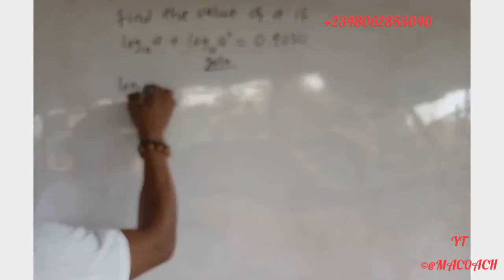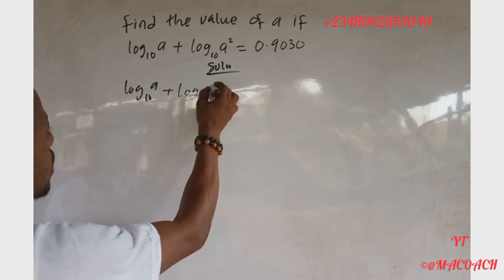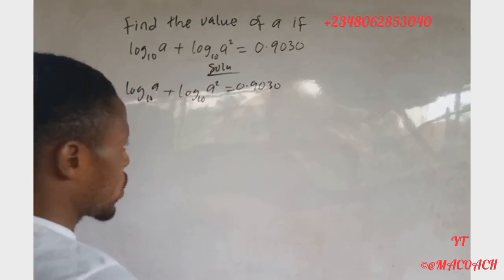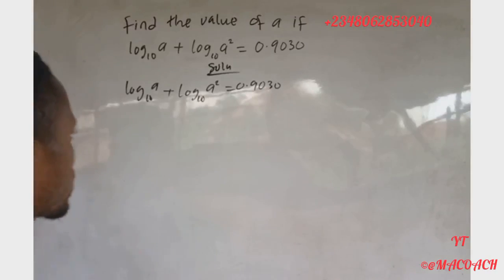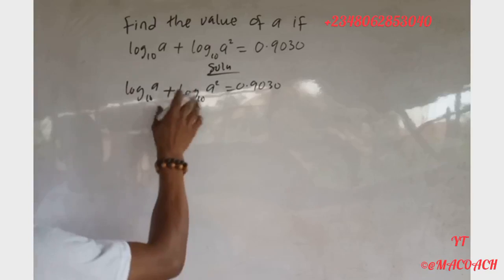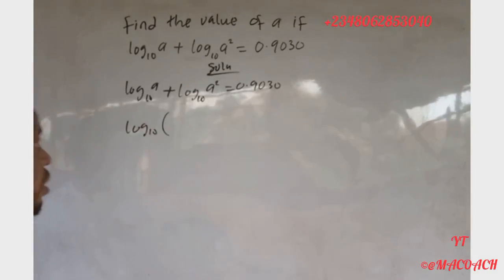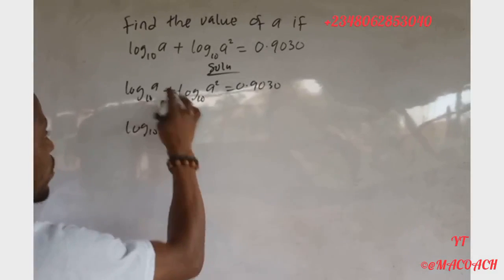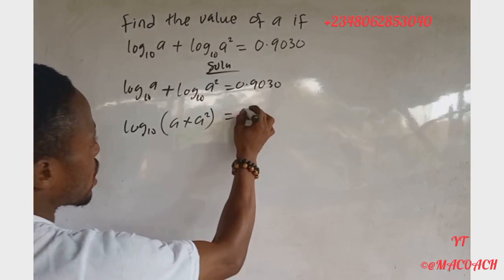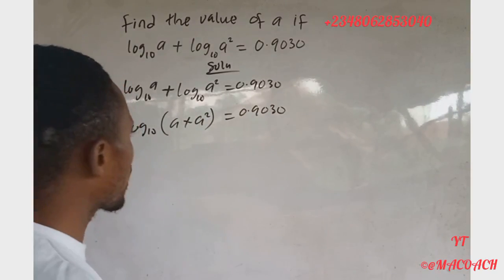Let me write the question again. We have log base 10 of 'a' plus log base 10 of 'a squared' equals 0.9030. Since log base 10 is common to both terms, we can factor it out: log base 10 of (a × a²) is equal to 0.9030.